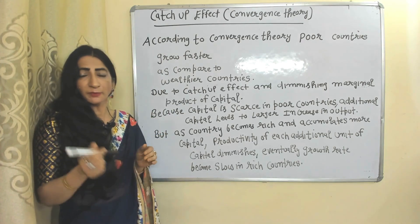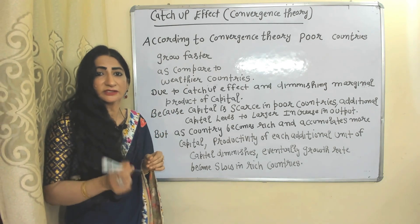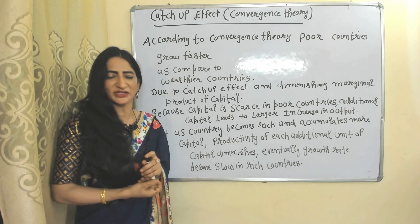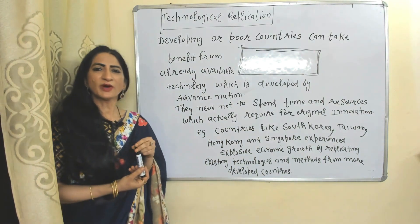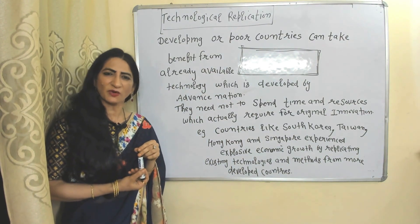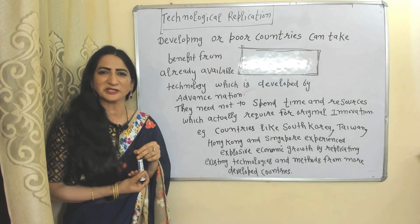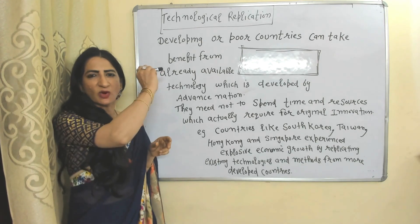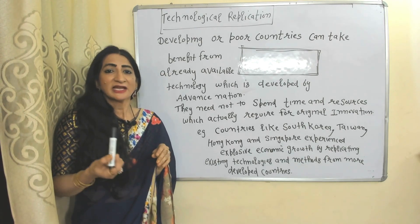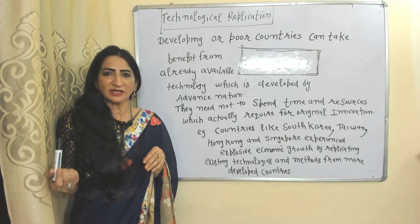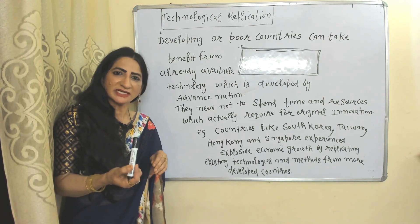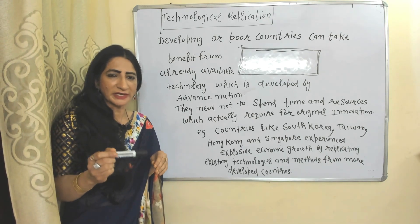Eventually their growth rate becomes slow. So according to the catch-up effect, poor countries grow faster compared to richer countries. One more reason is technological replication, which means poor countries imitate or copy the technology of advanced countries.